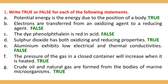Number D: A body has both oxidizing and reducing properties. Number E: Aluminium exhibits low electrical and thermal conductivity. The correct answer is that aluminium has high electrical and thermal conductivity.